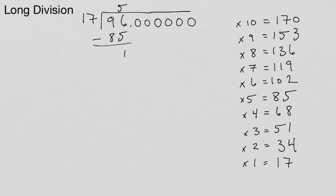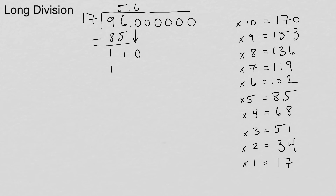11 is not on the chart, so we bring down a 0, giving us 110. 110 is between 102 and 119 on the chart, so we take the number down — 6 — and draw the decimal point: 5.6. 6 times 17 is 102, so we write 102 and subtract. That gives us a remainder of 8. 8 is not on the chart, so we bring down another 0.